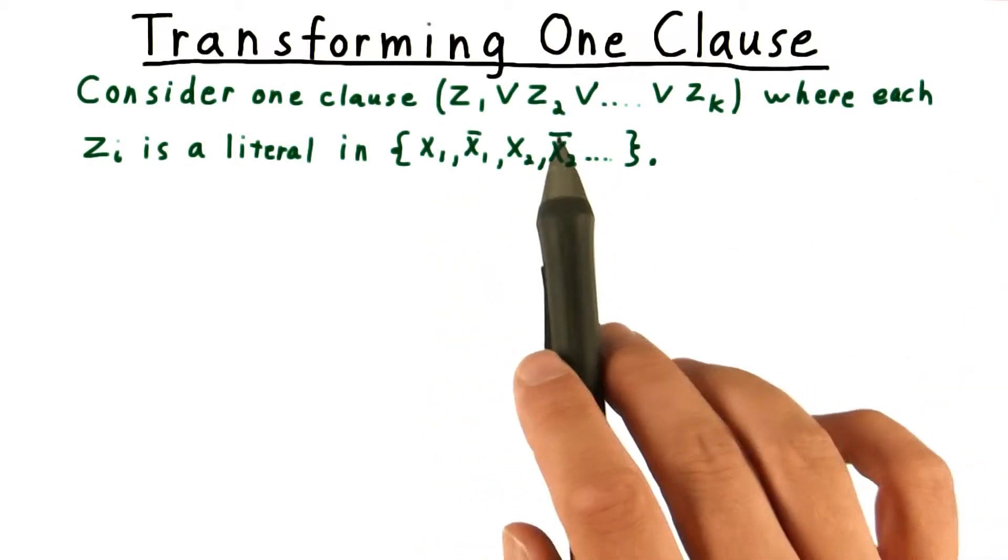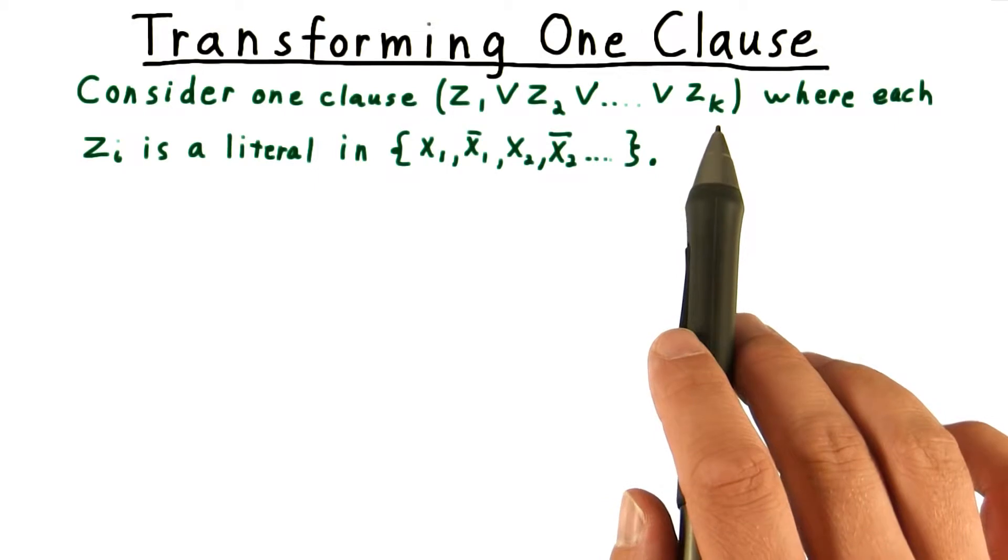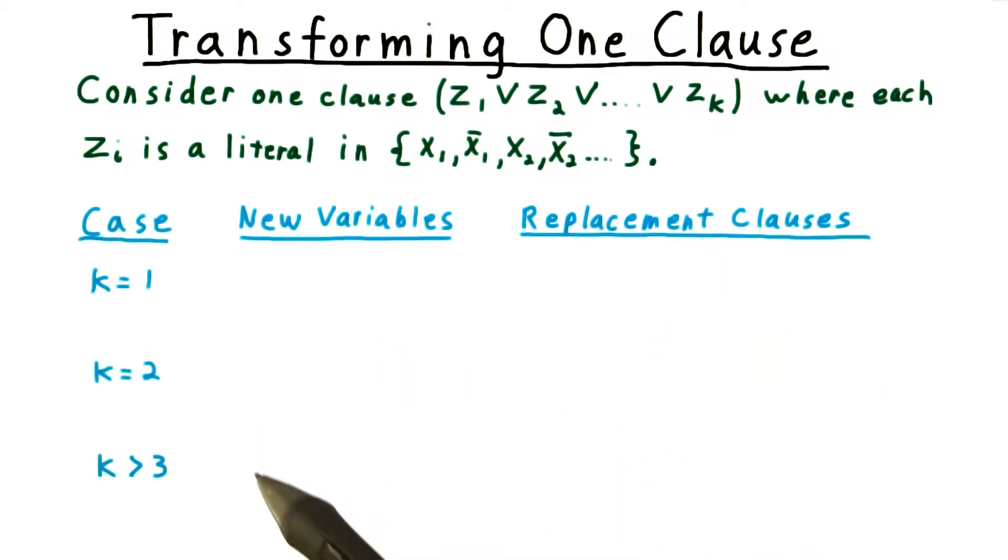So consider this one clause consisting of literals Z1 through ZK. We're going to have three cases depending on the number of literals in each clause. Note that I've left off K equals 3 since nothing needs to be done in that case.